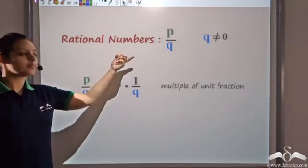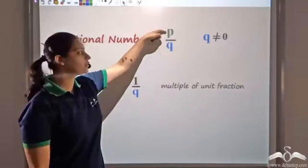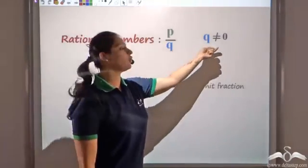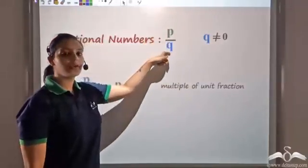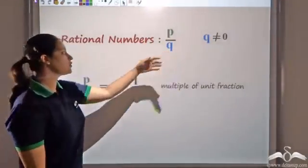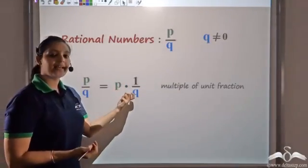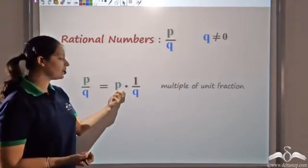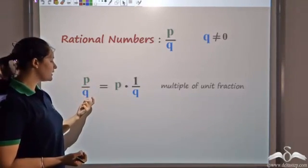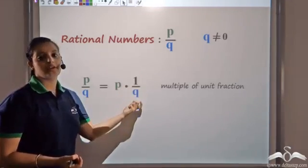We had seen that rational numbers were defined as p by q, where p is the numerator, q is the denominator, and the denominator cannot be zero. We had also seen that p by q can be interpreted as p times 1 by q, that is, a multiple of a unit fraction.